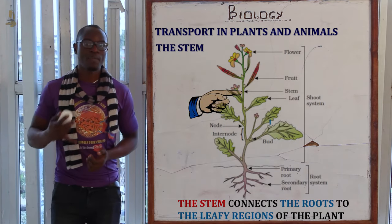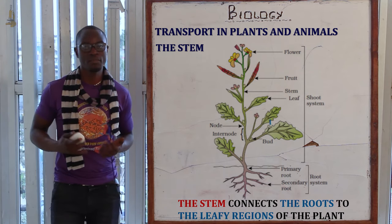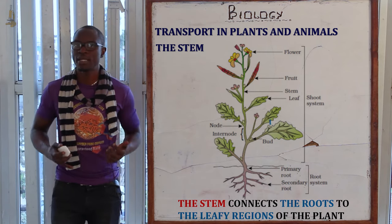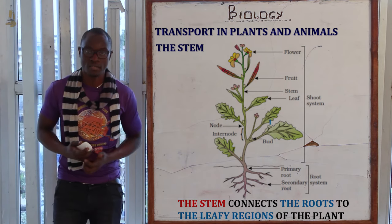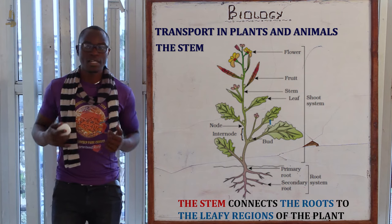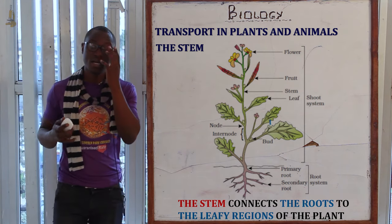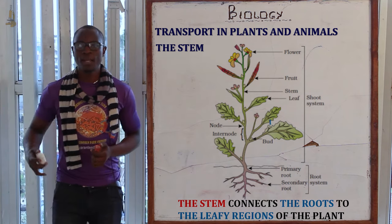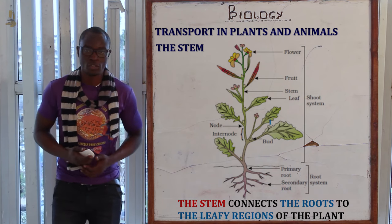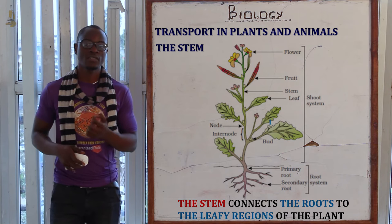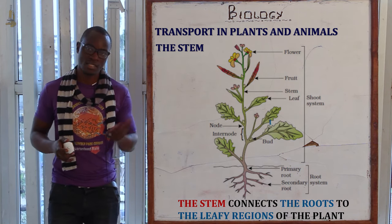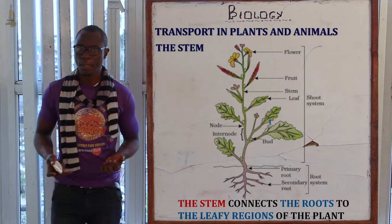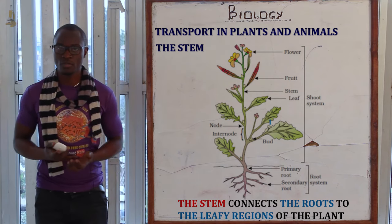The stem is the part of the plant connecting the root and the leafy regions. It is located between the leaves and the root. It mainly exposes the leaf to sunlight and supports the upper parts of the plant. In some plants the stem acts as a storage organ, for example potato, sugar cane, and sweet potato. In some plants the stem may also be used for propagation — rather than planting a seed, you cut the stem and plant it. Examples include sugar cane and cassava.